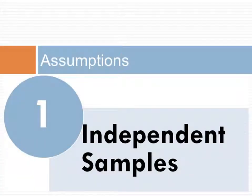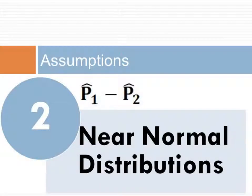First, we begin with a check of assumptions. Our first assumption is that the data came from two independent samples. This may be reasonable if we follow the random process and if we sampled less than 10% of the population. The second assumption is that the difference of the sample rates follows a normal model when each proportion separately follows a normal model.